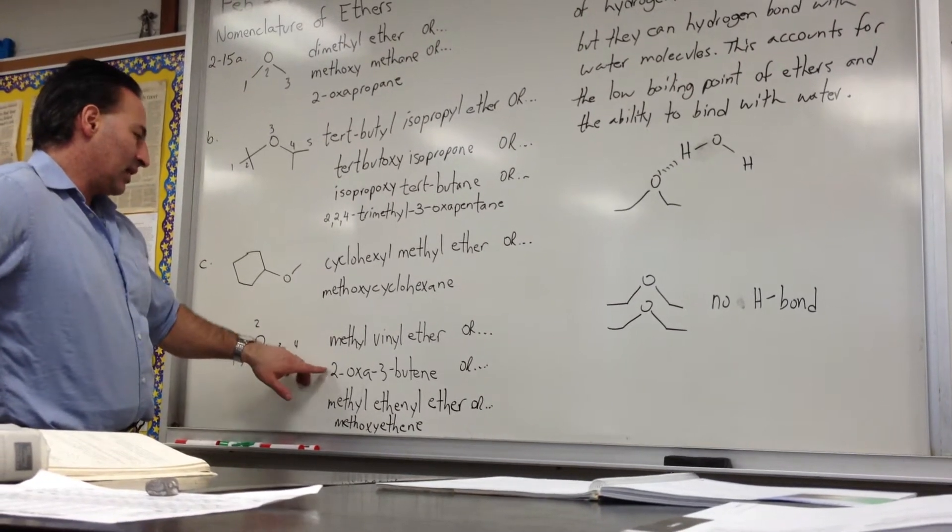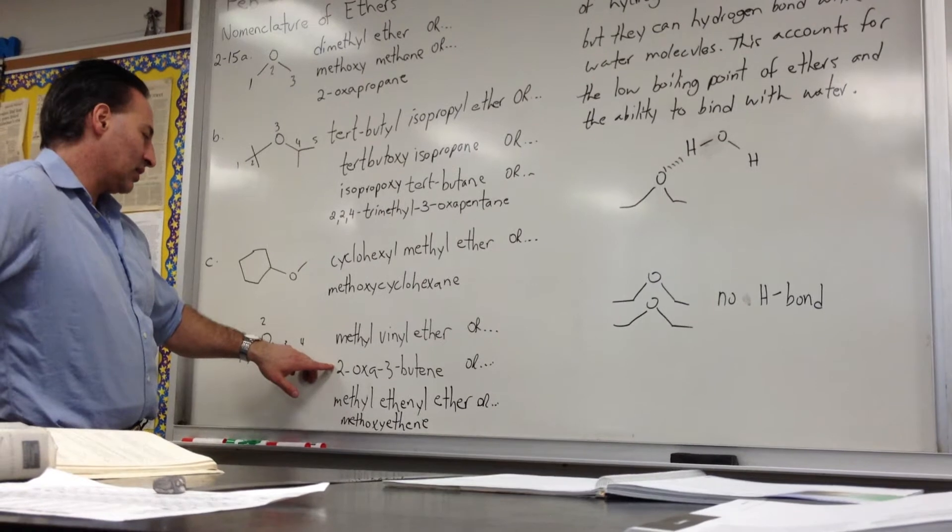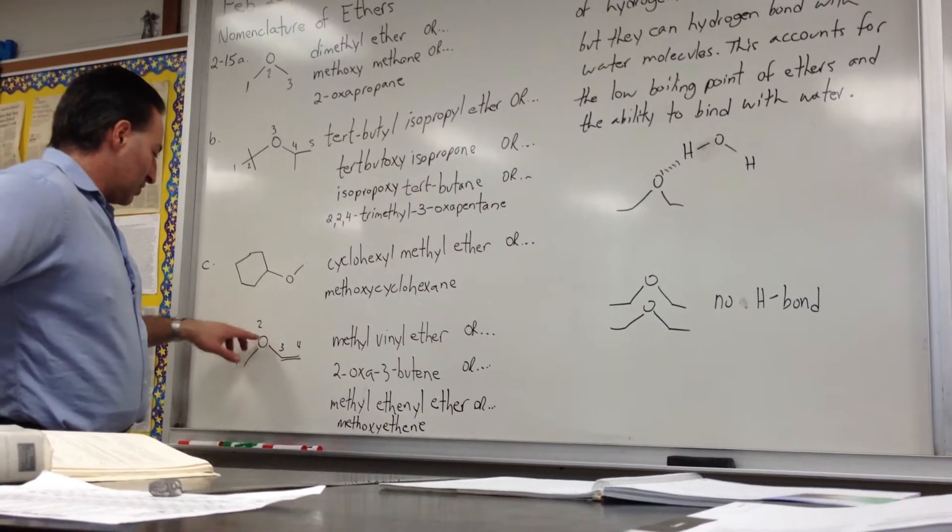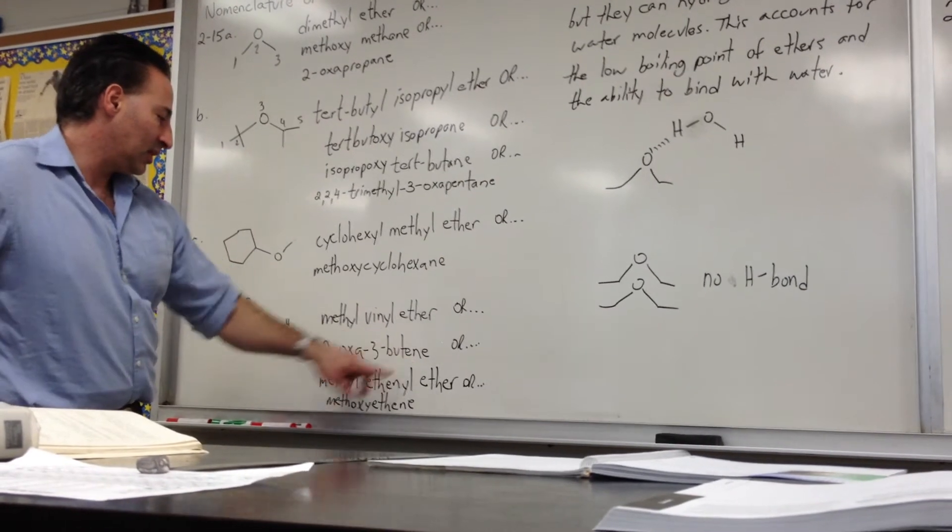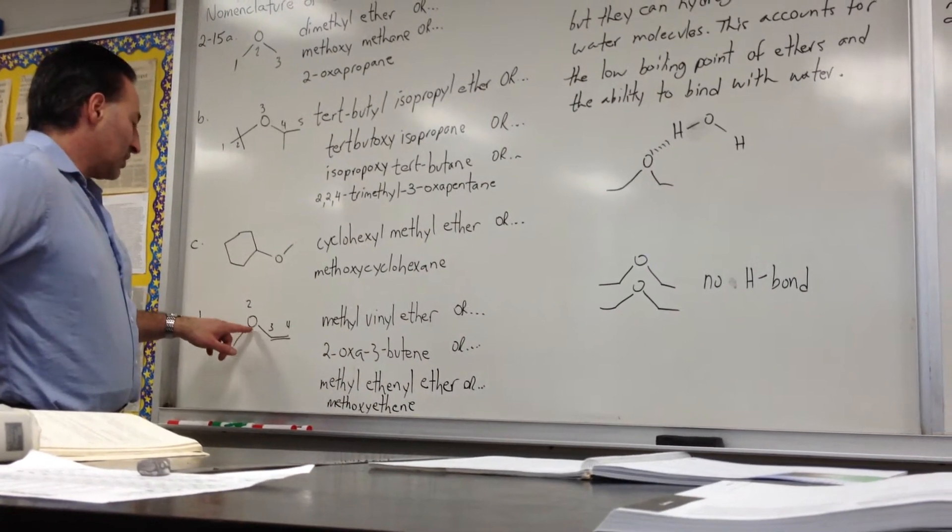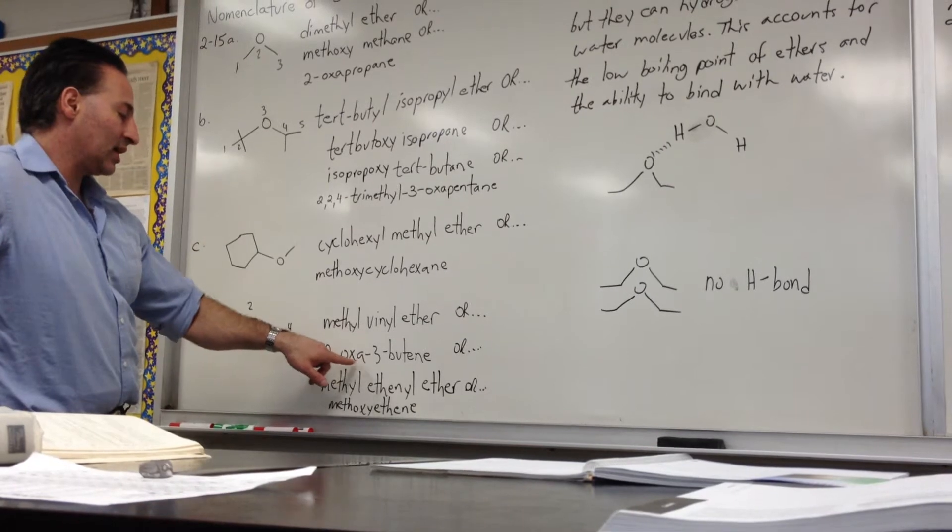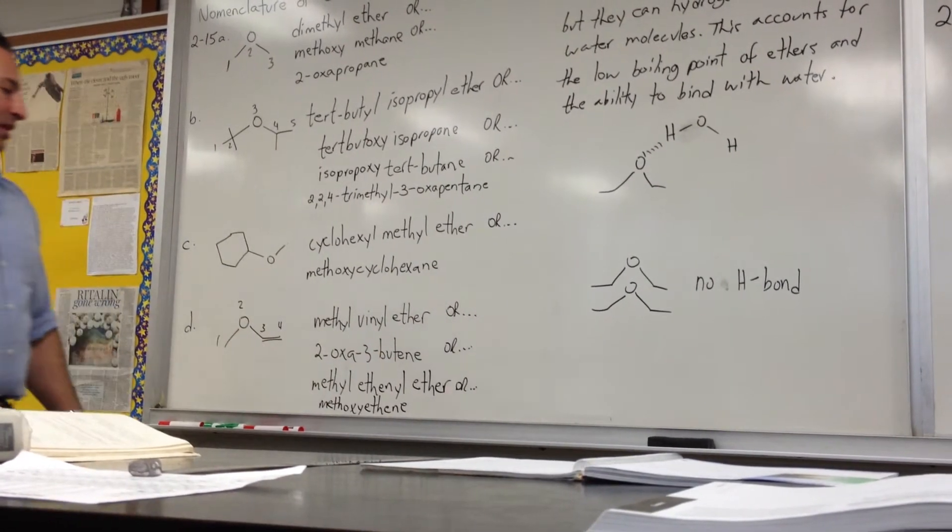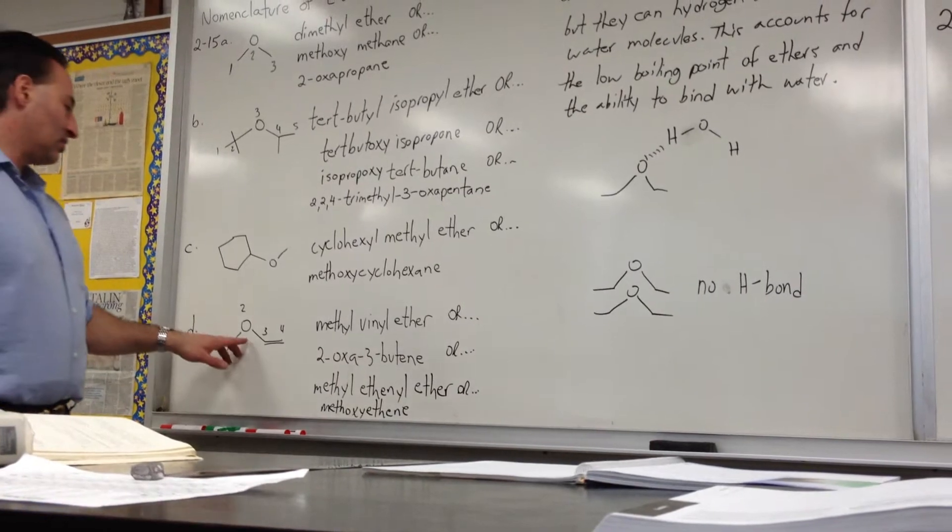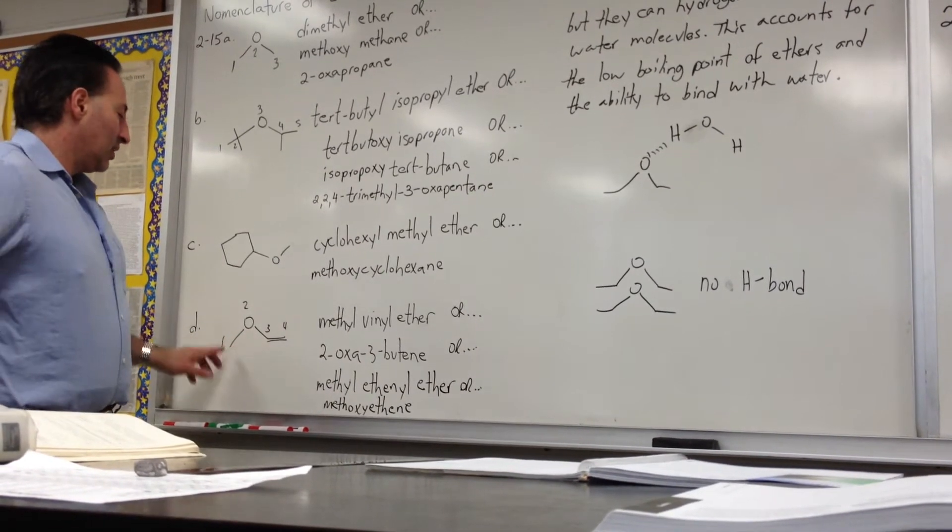And you could name it the way I favor the most is to call it the longest continuous chain is a but. There's a double bond in the third position, so you call it three-butene. And the second position is the oxygen. Notice how oxygen has a higher priority. The ether has a higher priority than the alkene. So you call it two-oxa, three-butene.